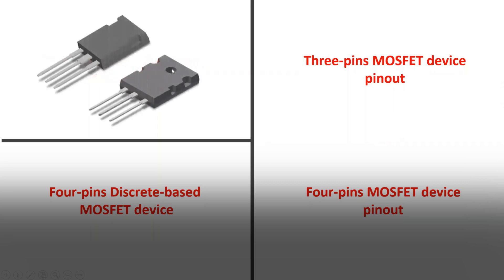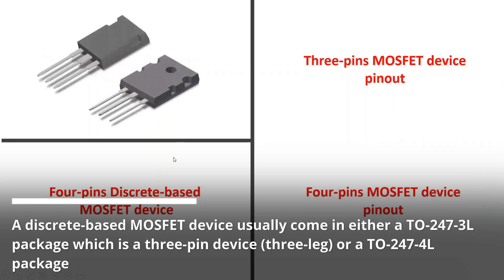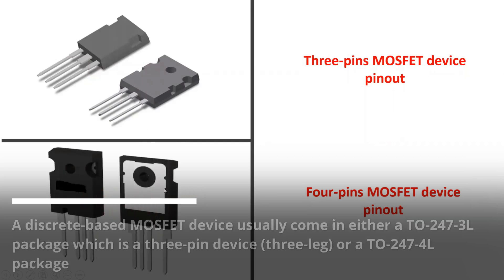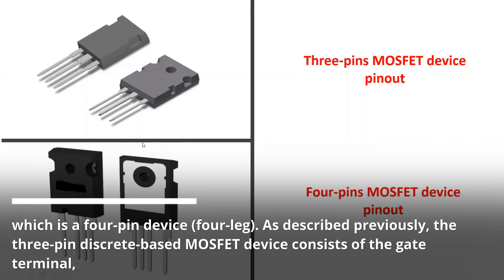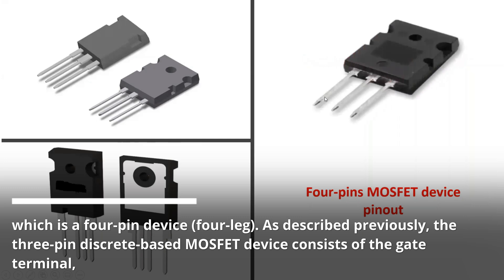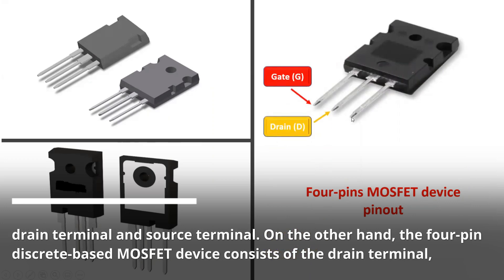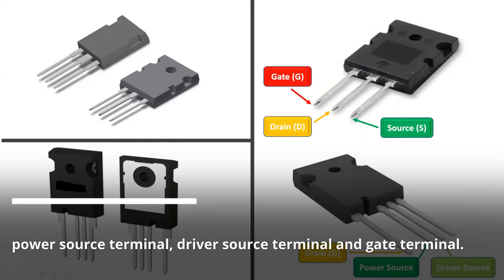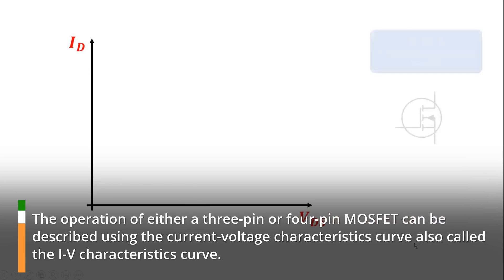A discrete-based MOSFET device usually comes in either an A2247-3L package, which is a three-pin, three-leg device, or an A2247-4L package, which is a four-pin, four-leg device. The three-pin discrete-based MOSFET device consists of the gate terminal, drain terminal, and source terminal. The four-pin discrete-based MOSFET device consists of the drain terminal, power source terminal, driver source terminal, and gate terminal. The operation of either a three-pin or four-pin MOSFET can be described using the current-voltage characteristics curve, also called the IV characteristics curve, which highlights the operating regions of the MOSFET based on the application of the device.